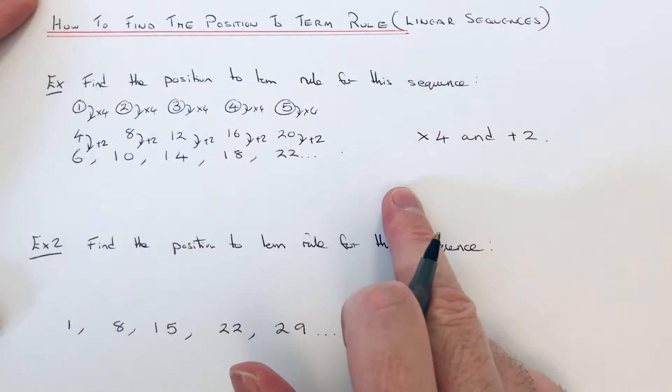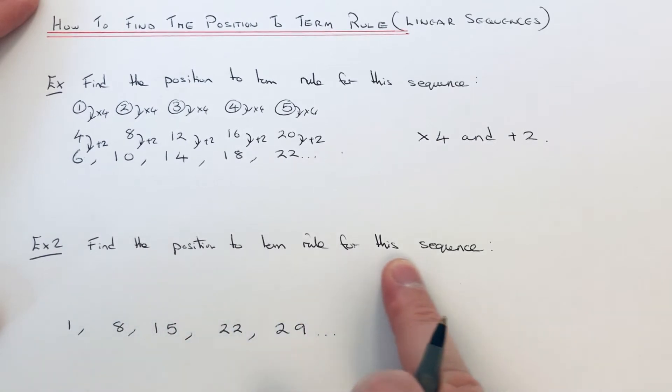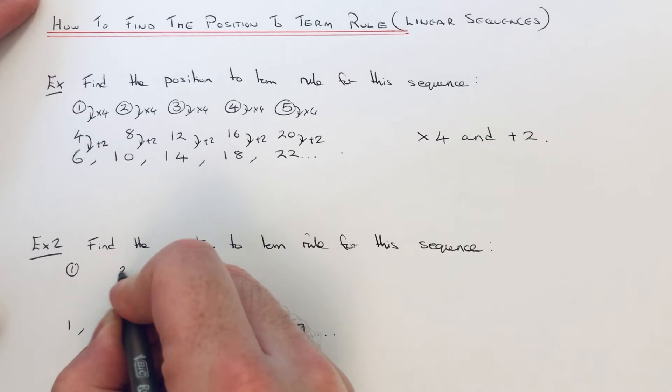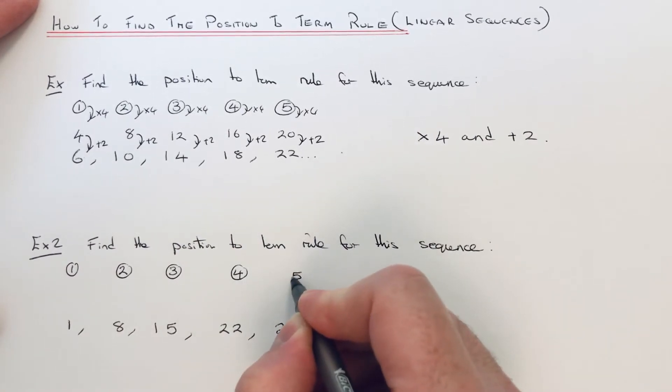Let's have a look at our second example: find the position-to-term rule for this sequence. This time we've got 1, 8, 15, 22, 29. The first thing we need to do is write the numbers 1 to 5 above the top, so we're looking for a rule which takes us from these position numbers to the numbers in the sequence.